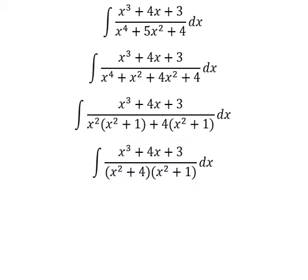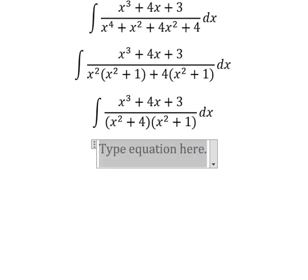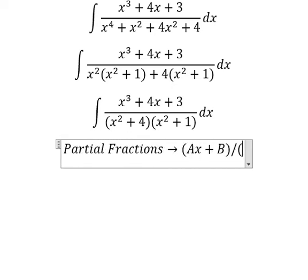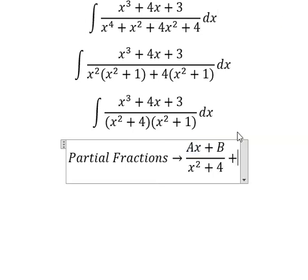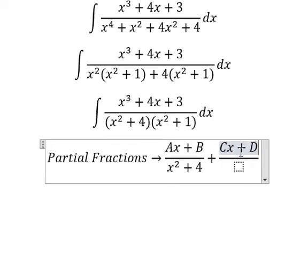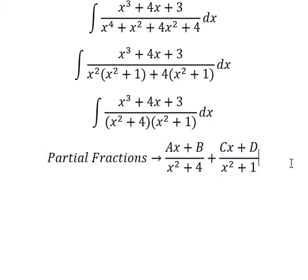Next, we can set up partial fractions. I will put (As+B) over (s²+4) — because we have power two, we need to reduce the power by one, so we get As, and reduce from power one to zero giving us B. The next term is (Cs+D) over (s²+1). Now we find the common denominator.